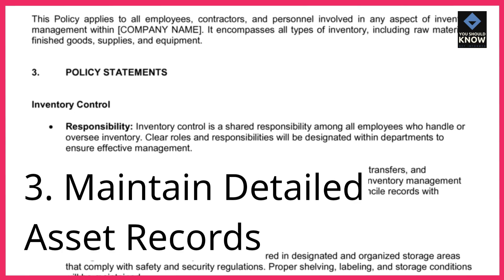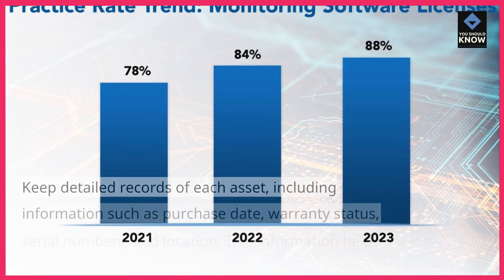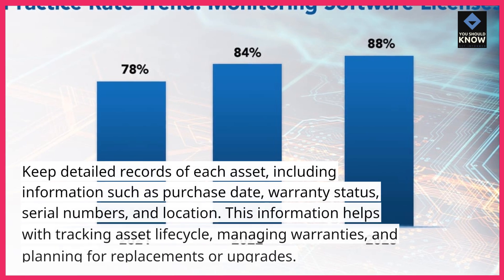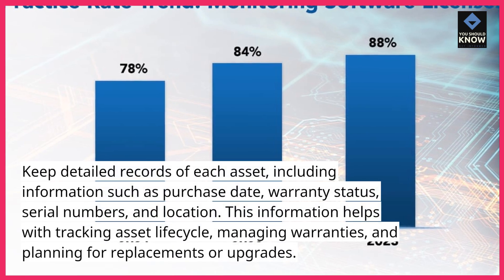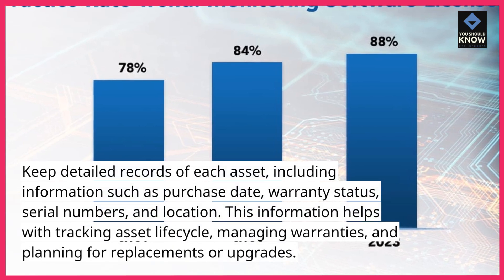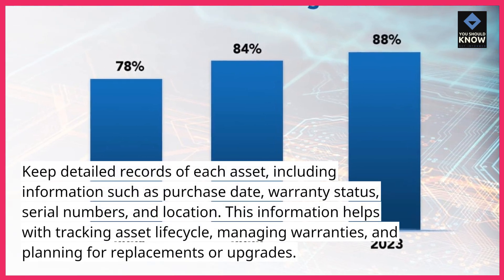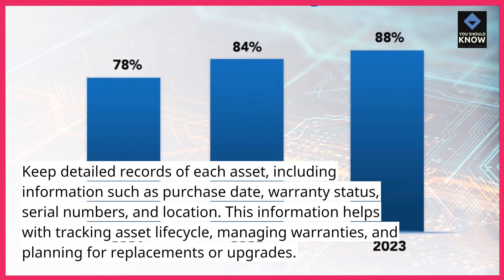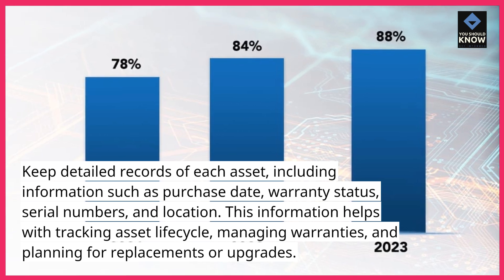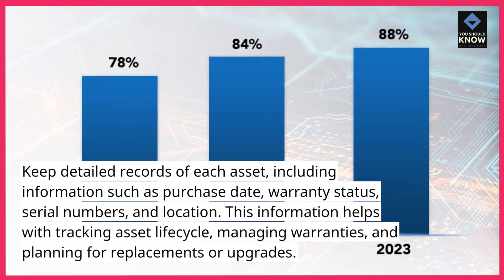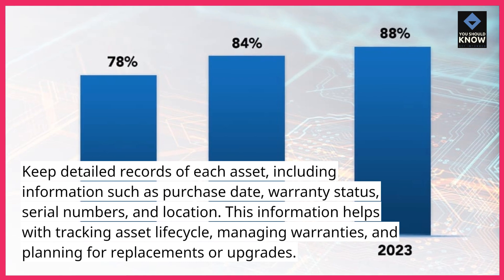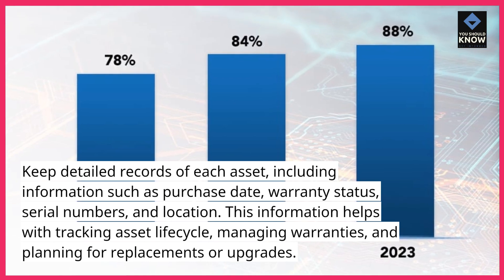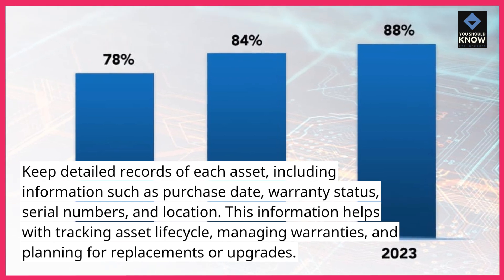Tip 3: Maintain detailed asset records. Keep detailed records of each asset, including information such as purchase date, warranty status, serial numbers, and location. This information helps with tracking asset lifecycle, managing warranties, and planning for replacements or upgrades.